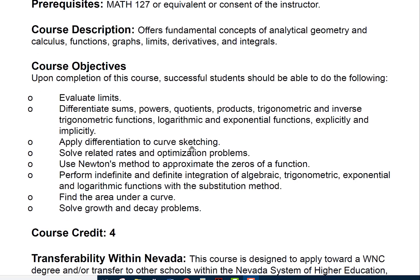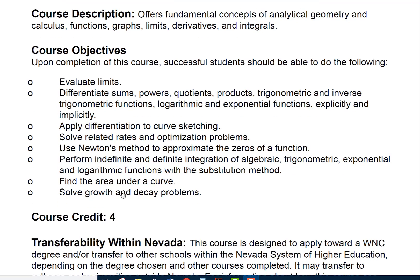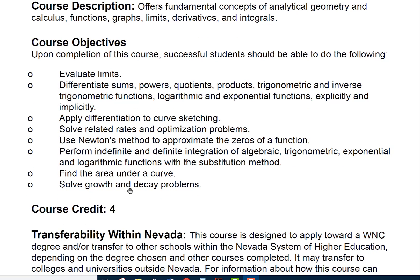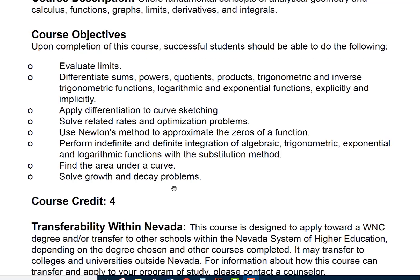Course objectives: upon completion of this course, successful students should be able to evaluate limits; differentiate sums, powers, quotients, products, trigonometric and inverse trigonometric functions, and logarithmic and exponential functions explicitly and implicitly; apply differentiation to curve sketching; solve related rates and optimization problems; use Newton's method to approximate the zeros of a function; perform indefinite and definite integration of algebraic, trigonometric, exponential and logarithmic functions with the substitution method; and find the area under the curve and solve growth and decay problems.